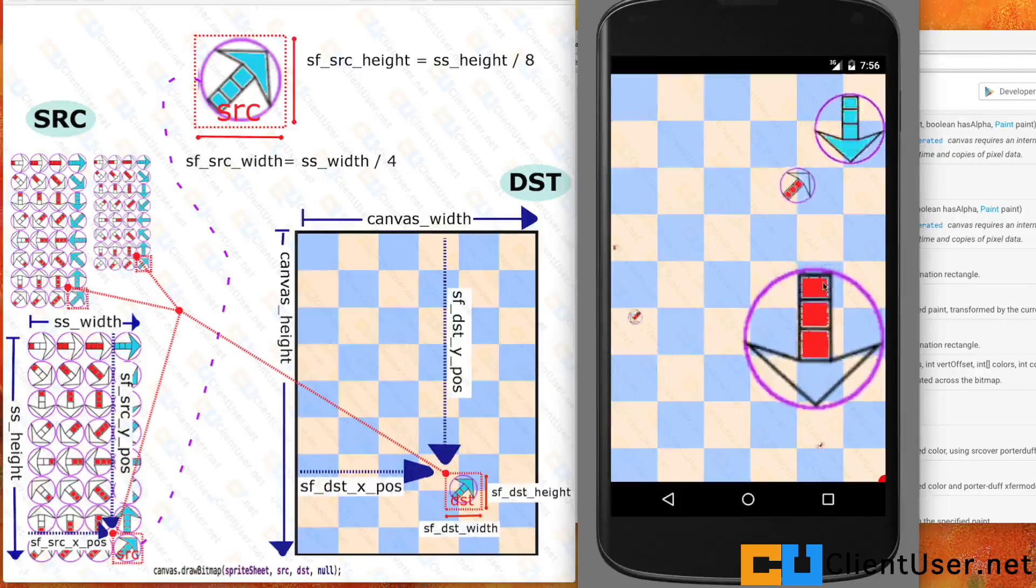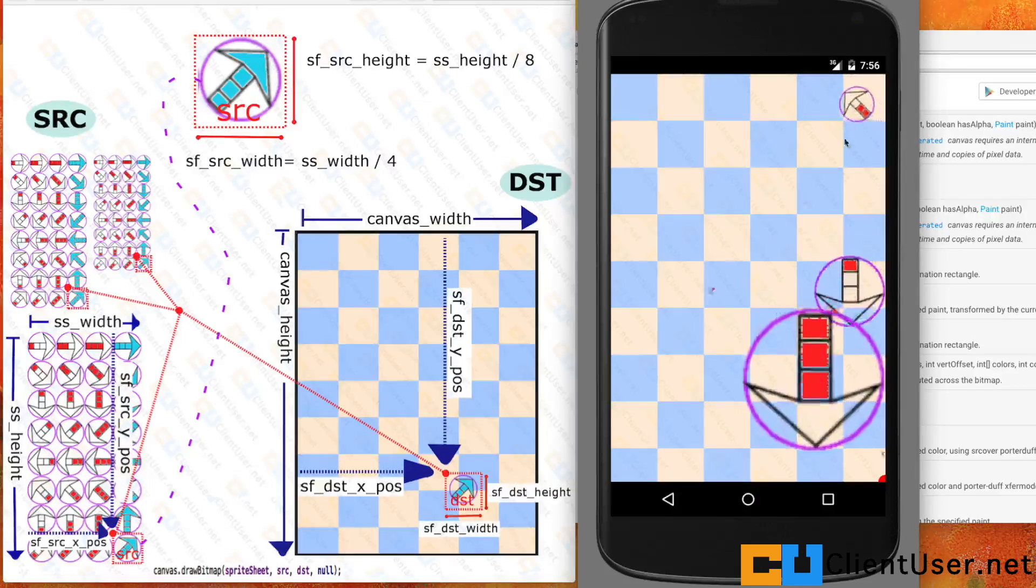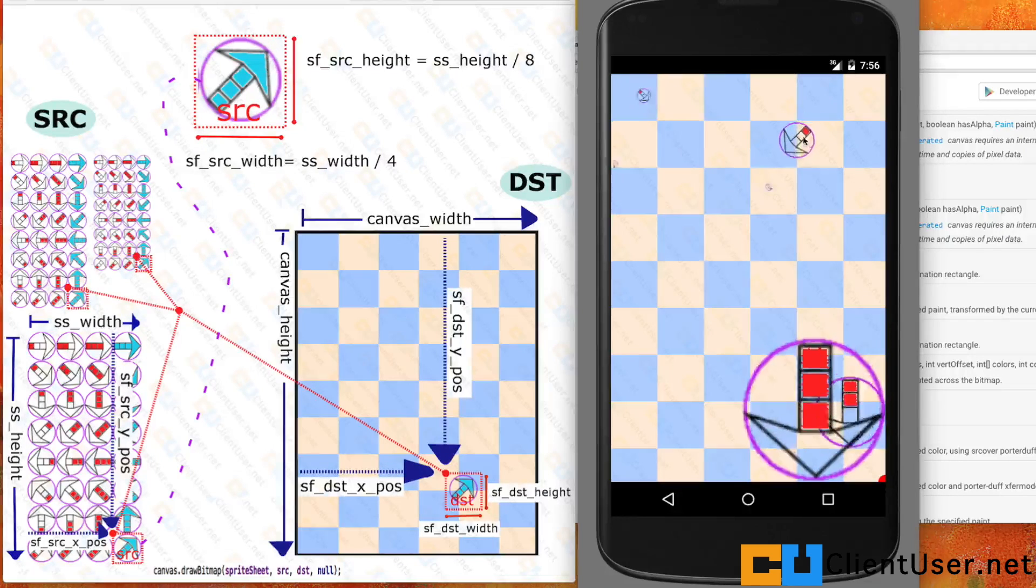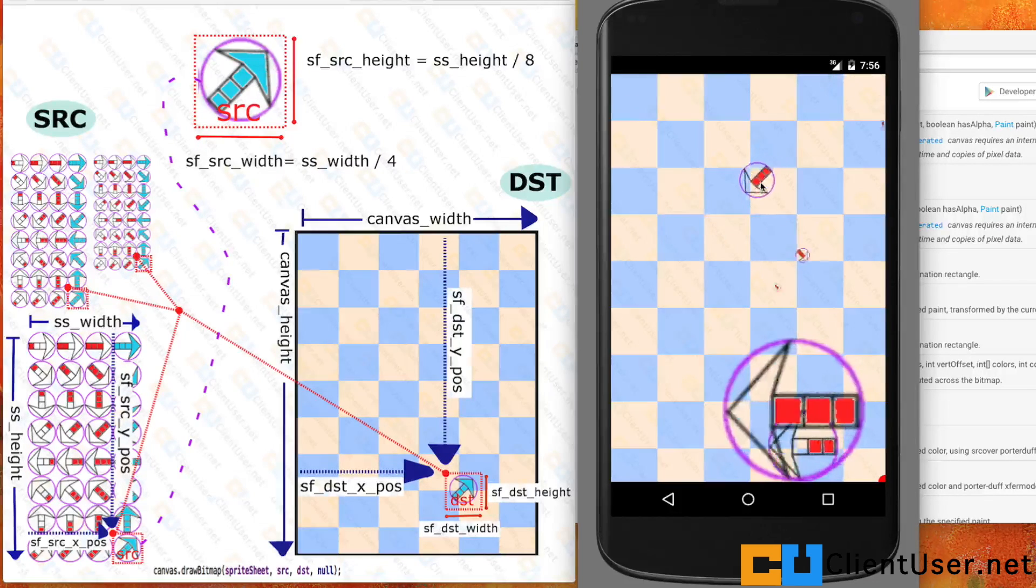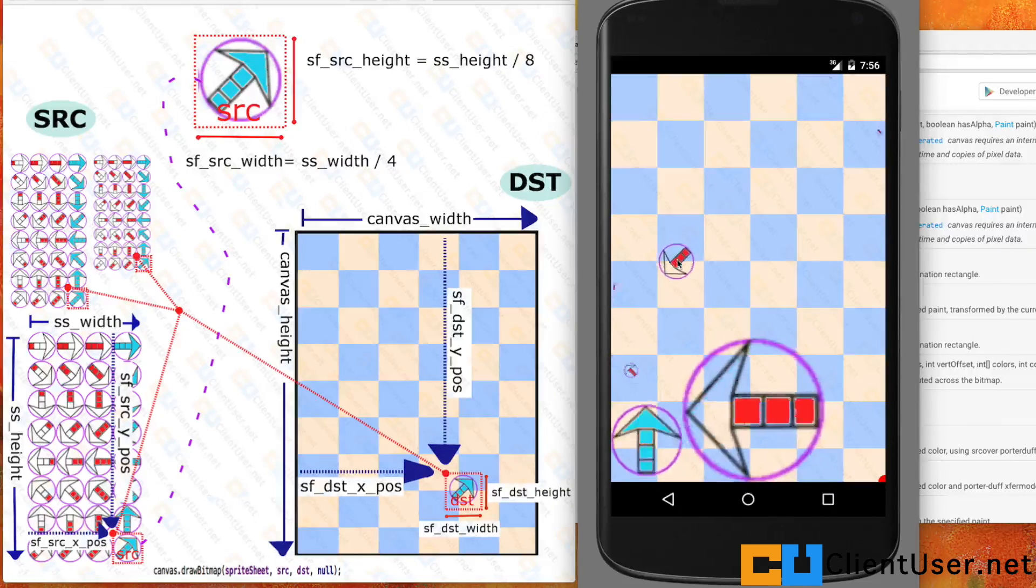You've got fast animation on this very large sprite, and you've got slower animation on this smaller sprite. And some of these I've kept the same. This one I've kept the same as the source.